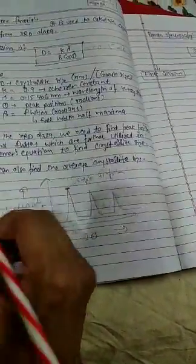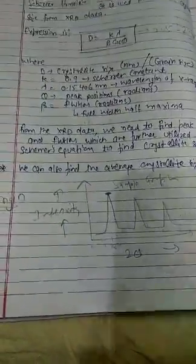This is the full width and then half maximum, FWHM. Basically we have a software called Origin that we most of the time use to calculate FWHM as well as the peak positions.